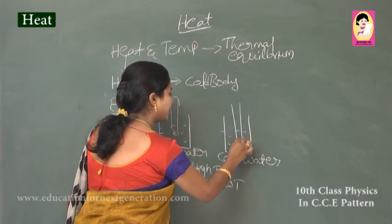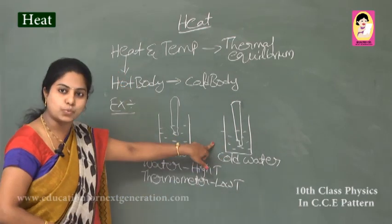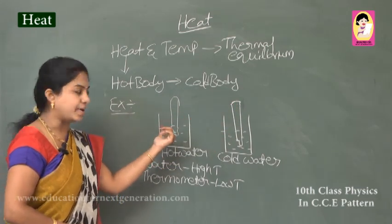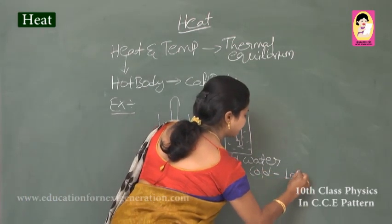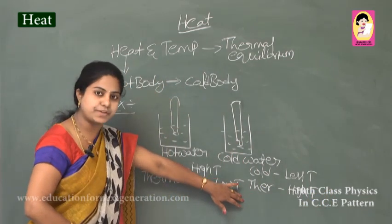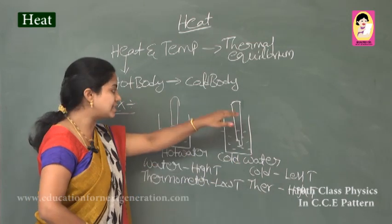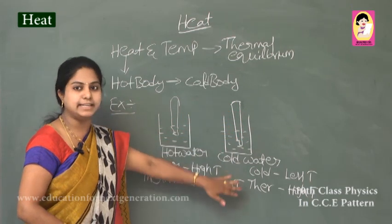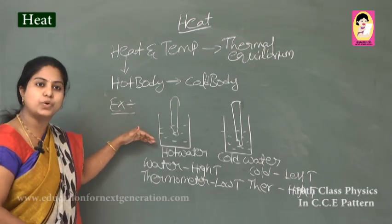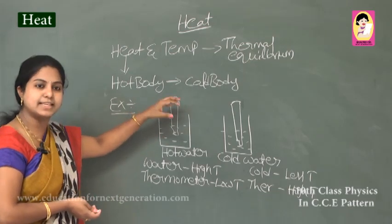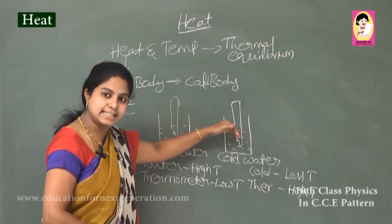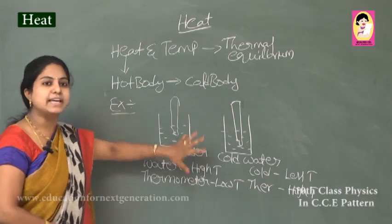In a similar manner, when you dip the thermometer in cold water, the mercury level decreases compared to the hot water experiment. Here the cold water has less temperature whereas the thermometer has higher temperature, so heat energy transfers from the thermometer to the cold water — the thermometer loses energy and mercury decreases. This transfer continues until both reach the same temperature, which is thermal equilibrium.